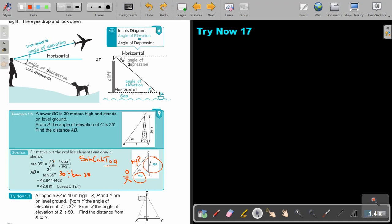A flagpole PZ is 10 meters high. It's always good to write everything in the sketch. That is 10. X, P and Y are on level ground. That's a straight line. From Y, the angle of elevation of Z, so from Y to Z, that is 32. From X, the angle of elevation of Z is 50. Find the distance from X to Y.